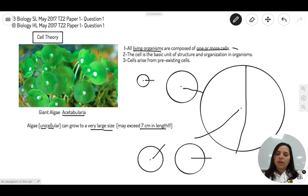So for every theory, there will be an exception. And acetabularia is an exception because it is one huge cell, not many cells, and it can function on its own. So it doesn't have to divide itself into many cells in order to function. It can work as one cell. And that is the answer.